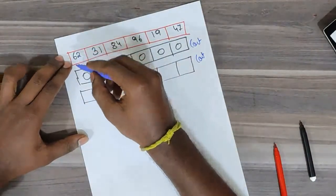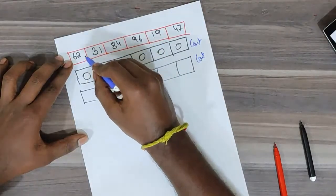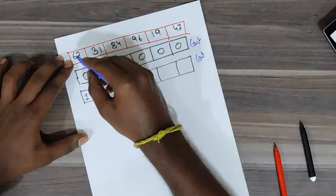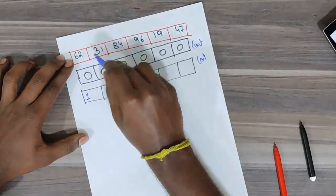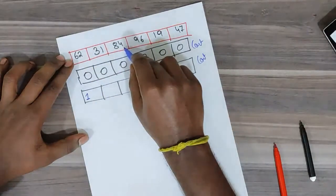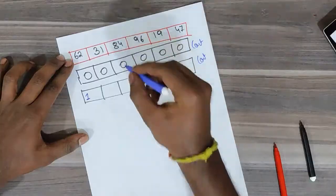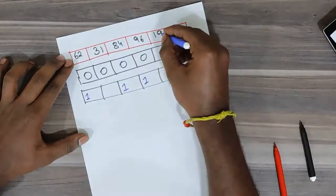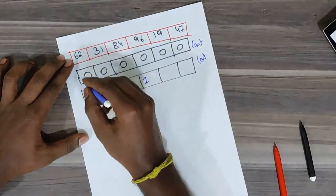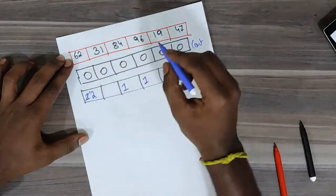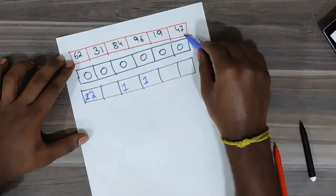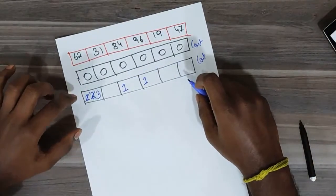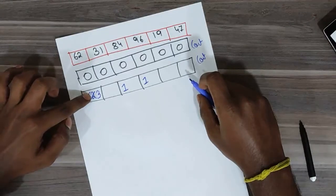On the first iteration, we compare 62 with 31. Since 62 is greater, we increment the corresponding element of 62 in count by 1 — it goes from 0 to 1. On comparing 62 and 84, we see that 84 is greater, so we increment the element corresponding to 84 by 1. Similarly for 96, we increment it since it is greater. For 19, 62 is greater, so we increment 62's count to 2. Finally, comparing 62 and 47, since 62 is greater, we increment 62's count to 3.